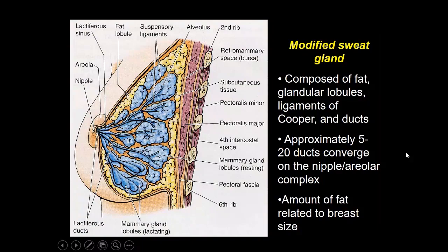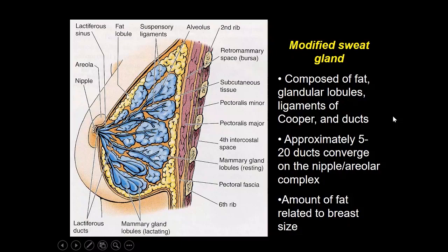In summary, the breast is really a modified sweat gland. It's composed of fat, glandular lobules, ligaments of Cooper, and the ducts, with about 5 to 20 ducts converging on the nipple-areolar complex. Keep in mind that it's the amount of fat that is thought to be related to breast size, not as much the amount of glandular tissue itself.